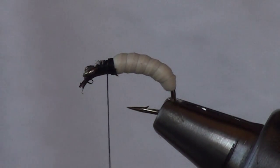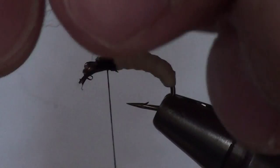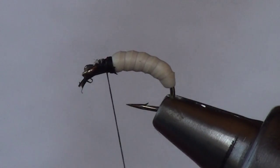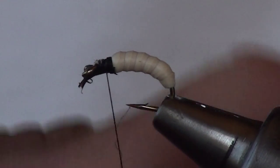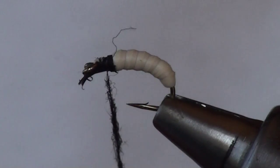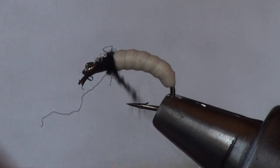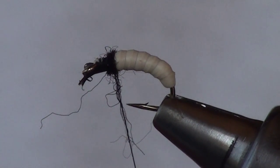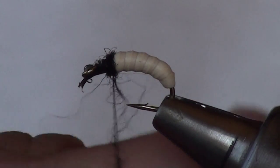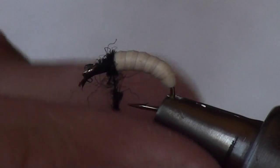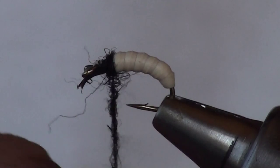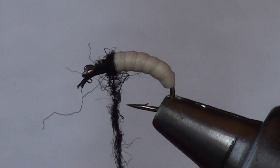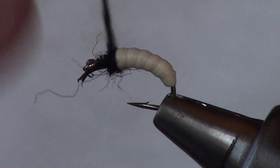Next is black dubbing, just a buggy black dubbing. You can use Antron, you can use a natural fur, something with guard hairs in it. If you've got dark colored hairs here, that might work as well. This happens to be an Antron synthetic dubbing. Apply that to the thread, keep it thin, and wrap forward.